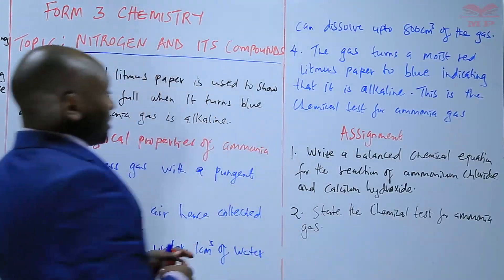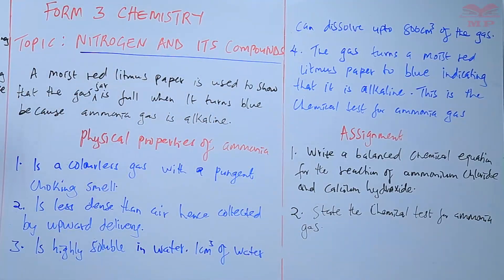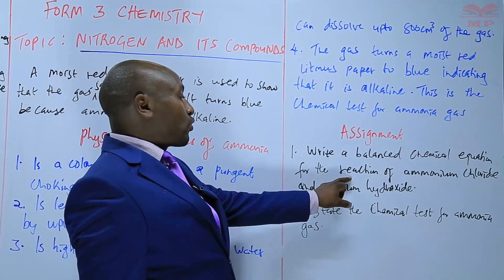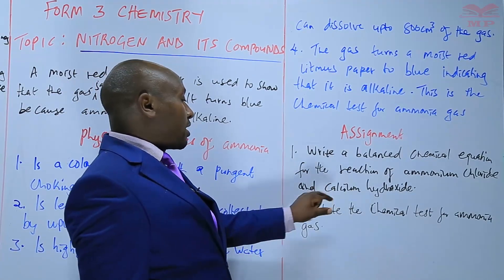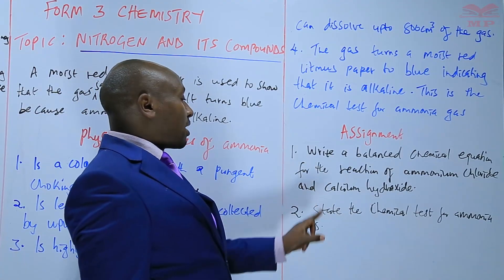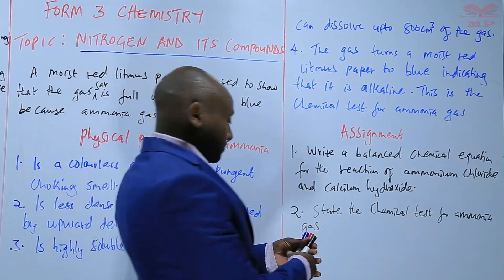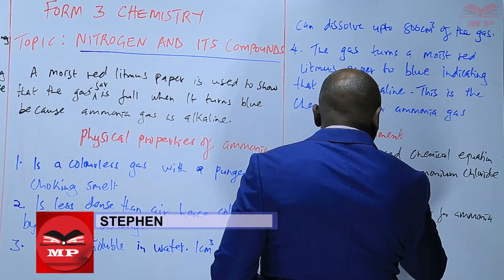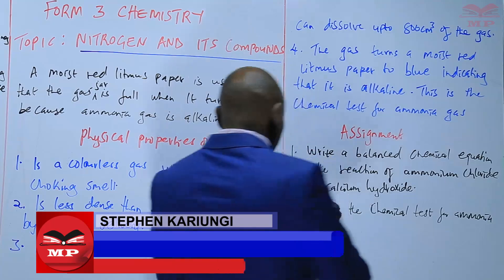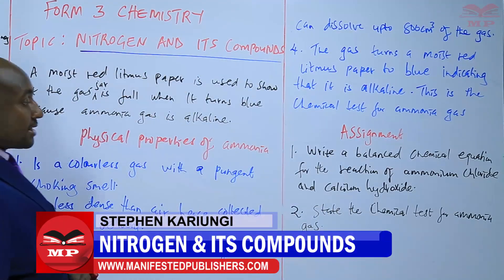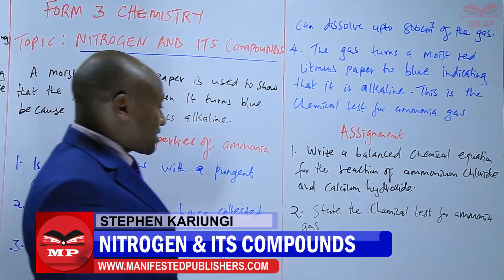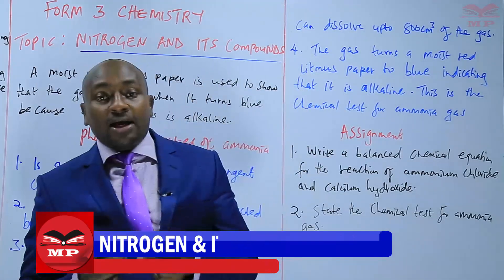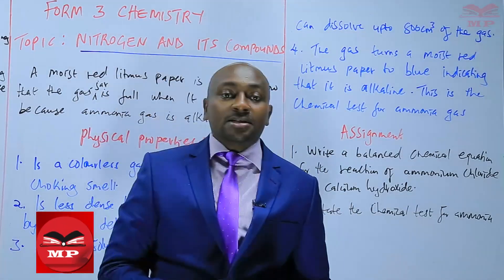The assignment for today: number one, write a balanced chemical equation for the reaction of ammonium chloride and calcium hydroxide. Number two, state the chemical test for ammonia gas. We'll stop there until next time. Goodbye.